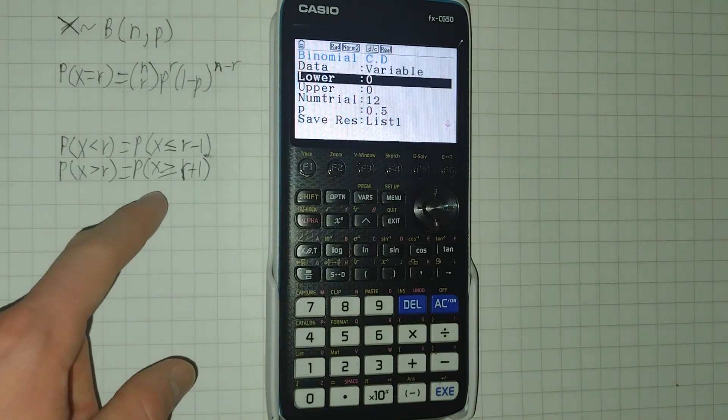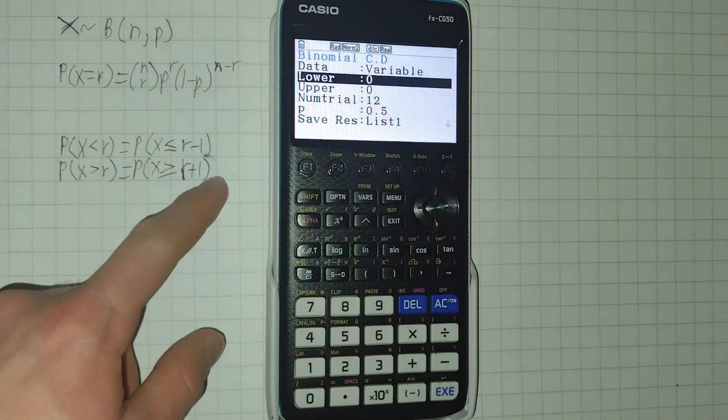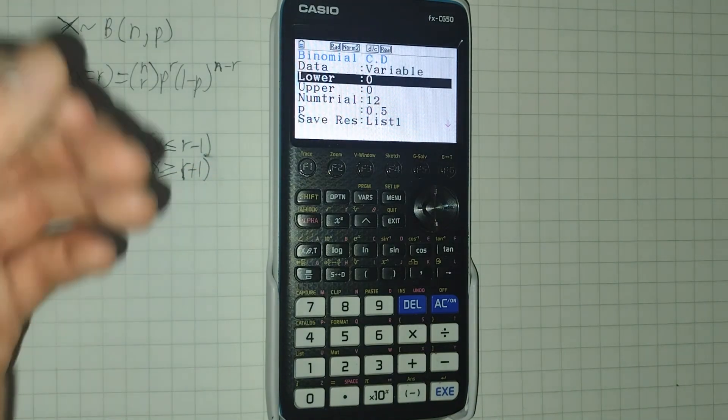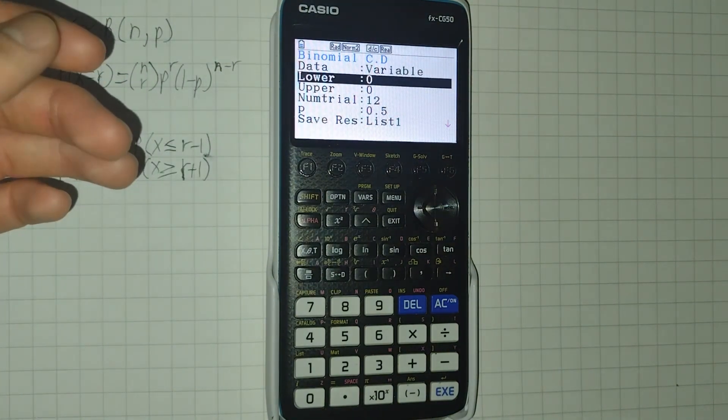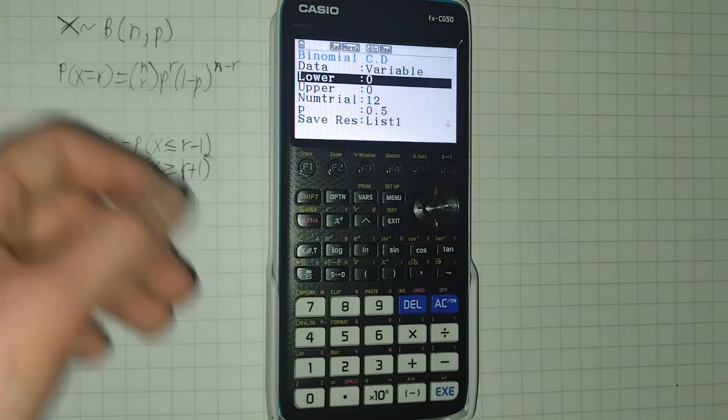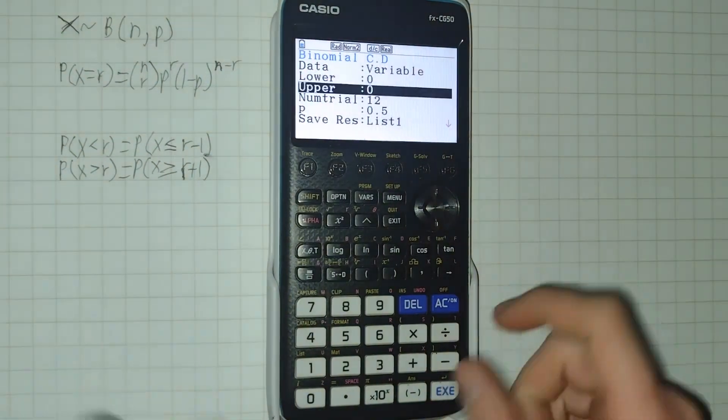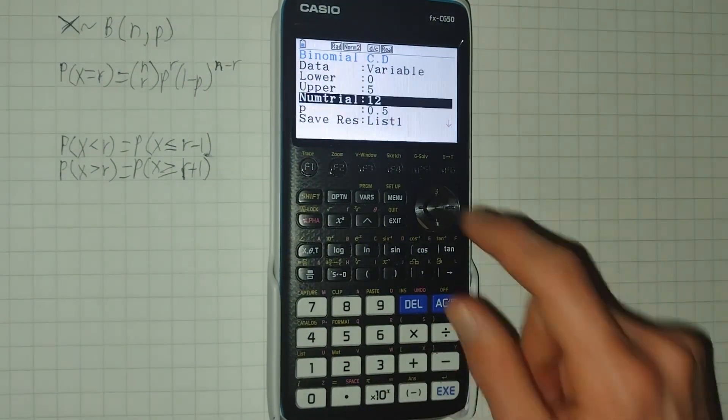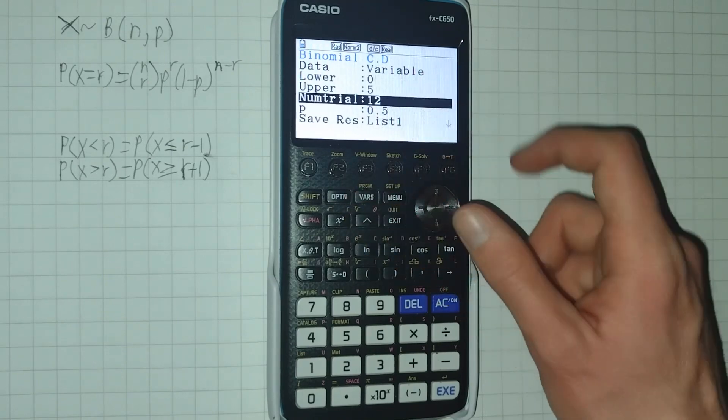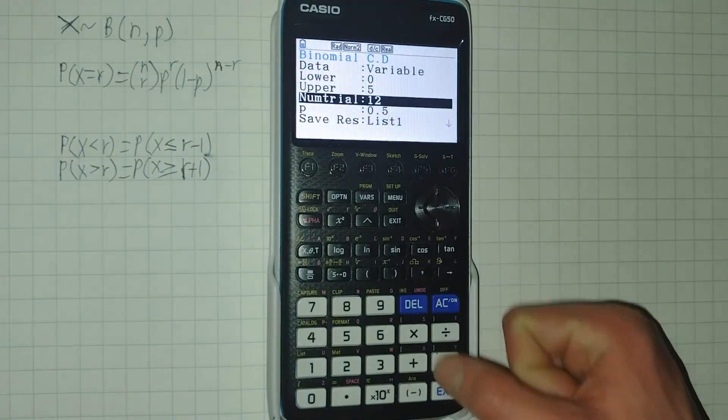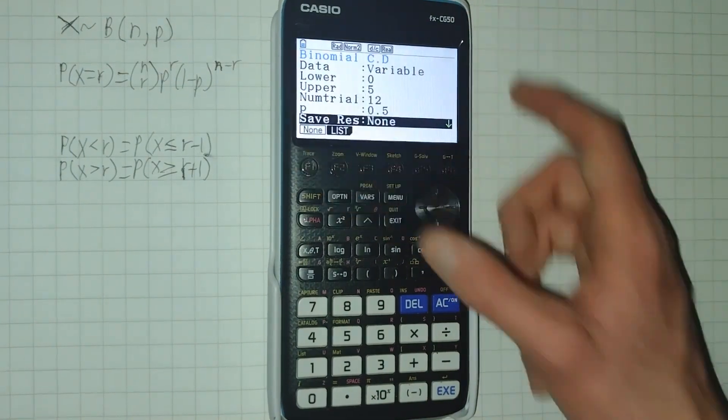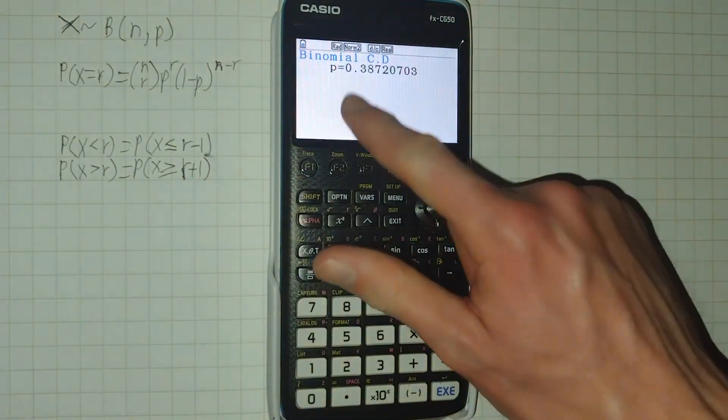Once you've done that, you can put in your lower bound. So if we're looking, let's say we want to know the probability of us getting five heads or less. So our lower bound is zero. Our upper bound will be five. And the other two are saved from when we did BPD, the number of times and the probability of happening. I'm not going to save this one to a list, and then we click execute, and we get our probability.